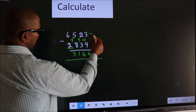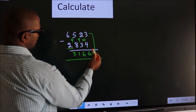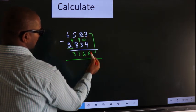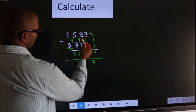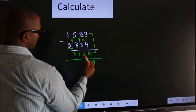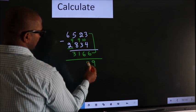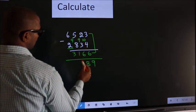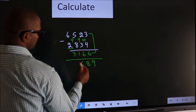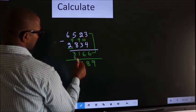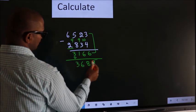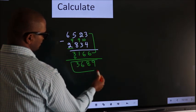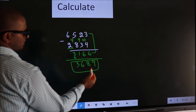Now, add these two. 3 plus 6 is 9. 2 plus 6 is 8. 5 plus 1 is 6. First digit as it is, you write. So, this is our answer.